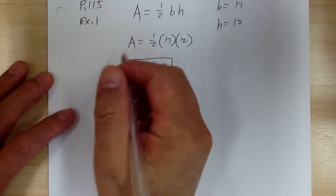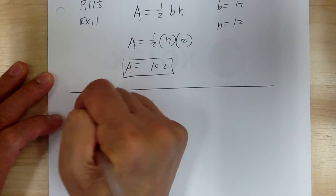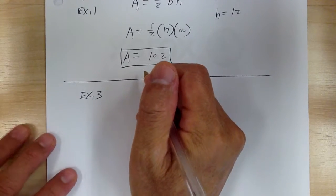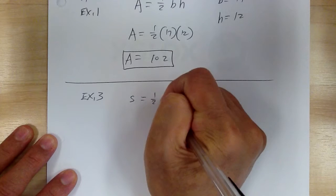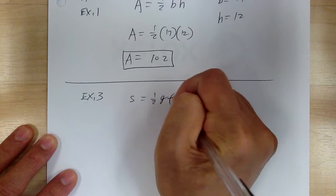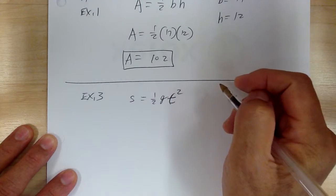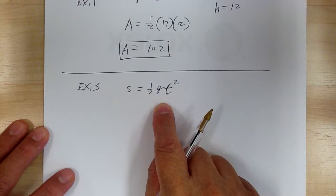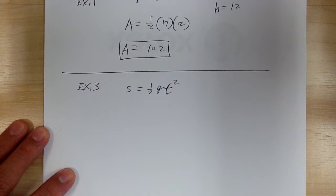And when you get to example 3, pay close attention to example 3. It says, giving the formula S equal to 1 half G T squared. And this is about physics. So this is a formula for the distance of an object during the free fall.